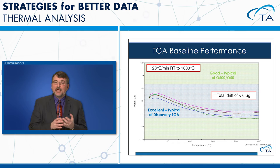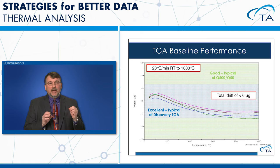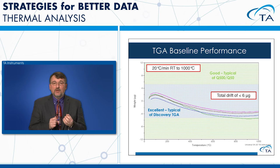For TGA performance, we look at weight drift as the furnace heats up. Plotting weight in micrograms, ±5 micrograms around zero is excellent performance, expected from the Discovery TGA. A Q500 or Q5000 will be wider. The key question: if my TGA has 50-microgram drift and I need to measure a 10-microgram weight change, that's impossible — but with only 3 micrograms of drift, that measurement is achievable.